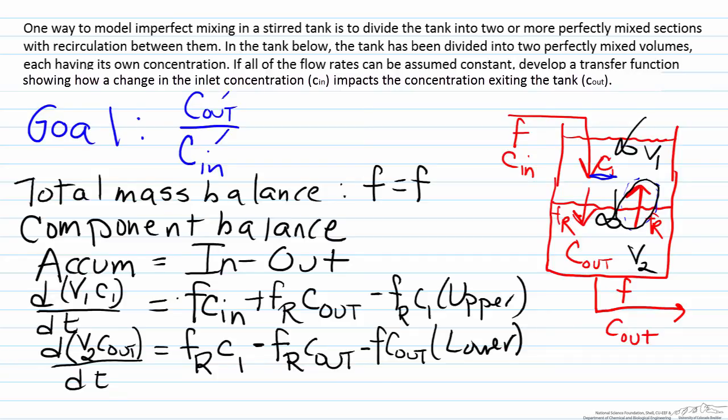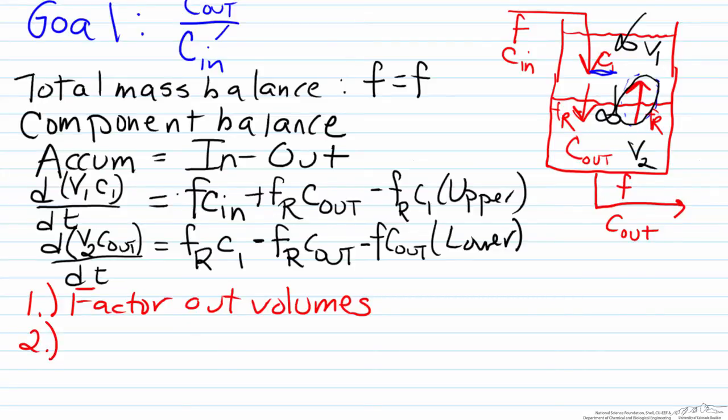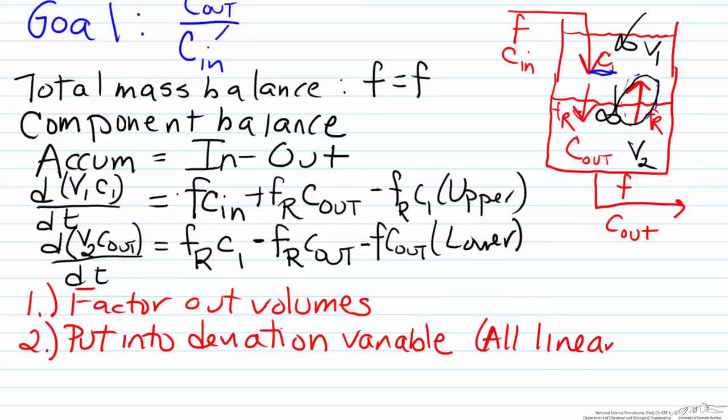What we want to do now is begin to get this into the Laplace domain, but we'll do a couple quick things first. We're going to factor out the volume terms and put into deviation variables. Here, because we're assuming that the flow rates are constant so the only things that can vary are the concentrations, all the terms are linear. This means we can easily replace all the C values with C prime, because there's no difference in the deviation and non-deviation in this situation if you subtract off the steady state equation.